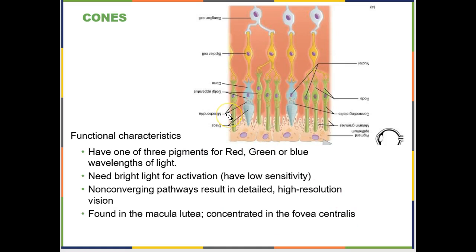Because cones have non-converging pathways — a more direct line of communication to ganglion cells — you get a higher resolution image. If every photoreceptor in the picture were a cone, you'd see that each cone has a one-to-one line of communication with a ganglion cell, which is the output to the brain. Every point on your retina that light strikes would be interpreted differently by the brain because the information comes from a different ganglion cell. This is why day vision and color vision is sharper than night vision, and why your center field of view is sharper than peripheral vision, which relies more heavily on rods.